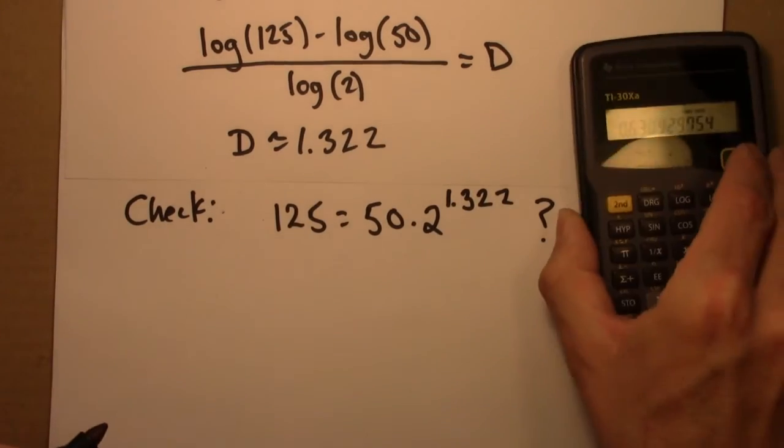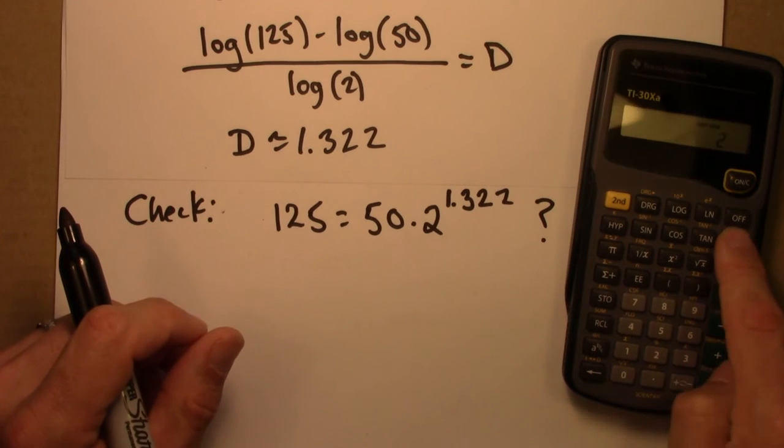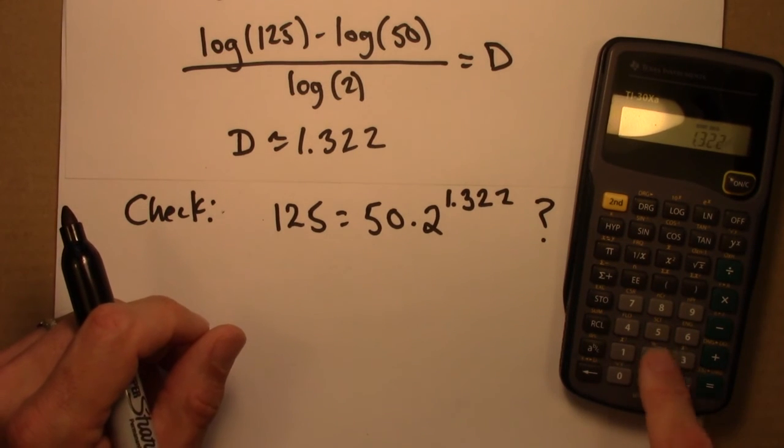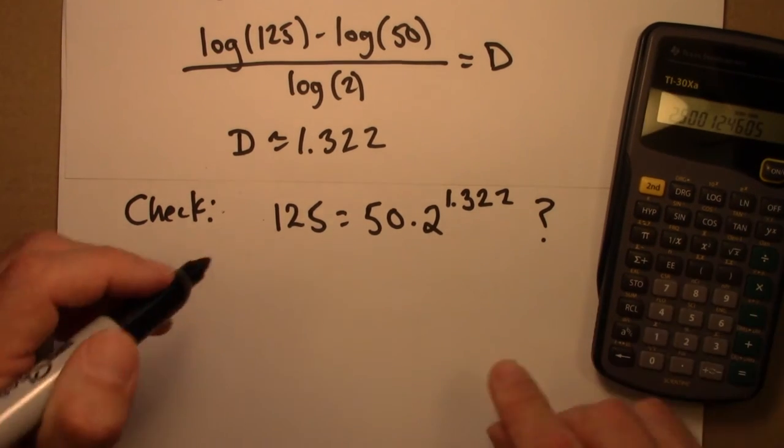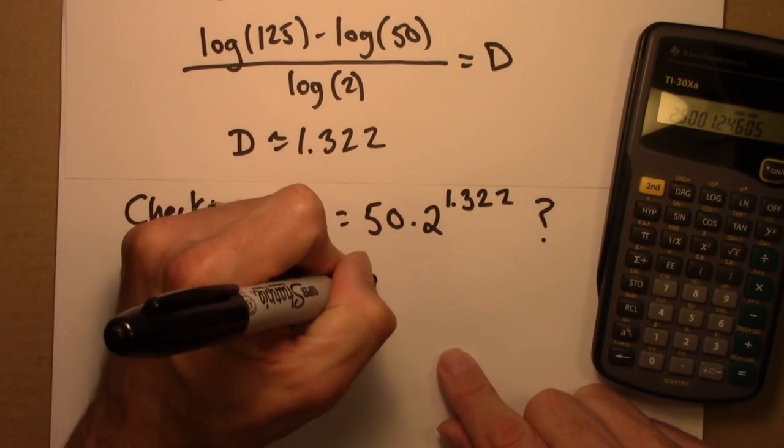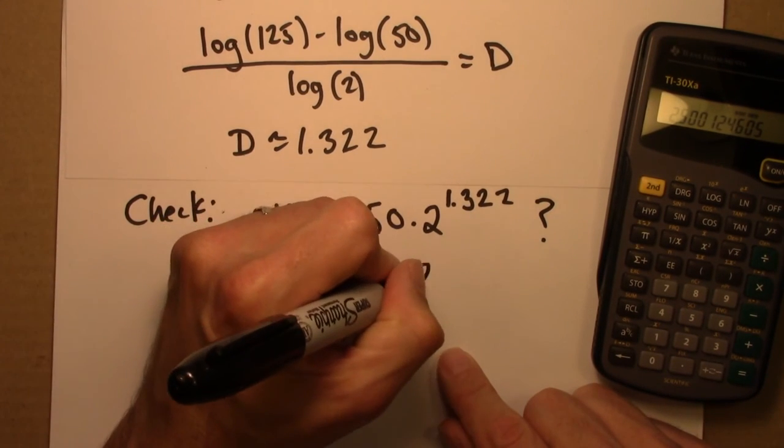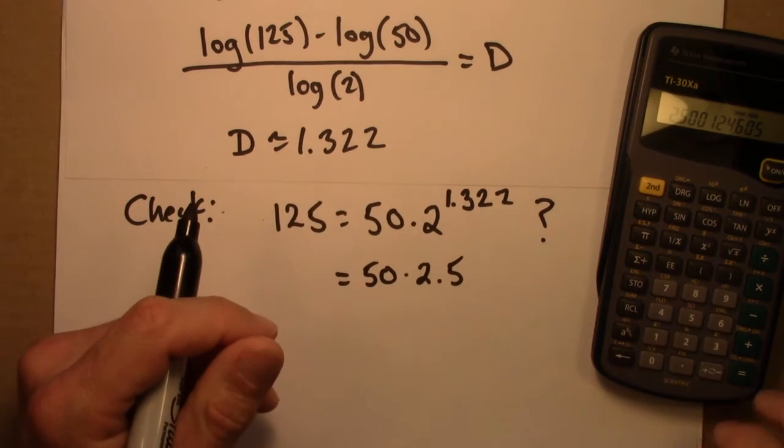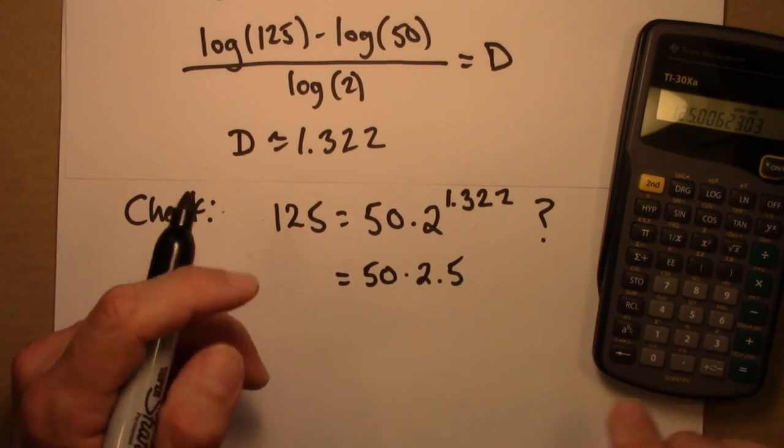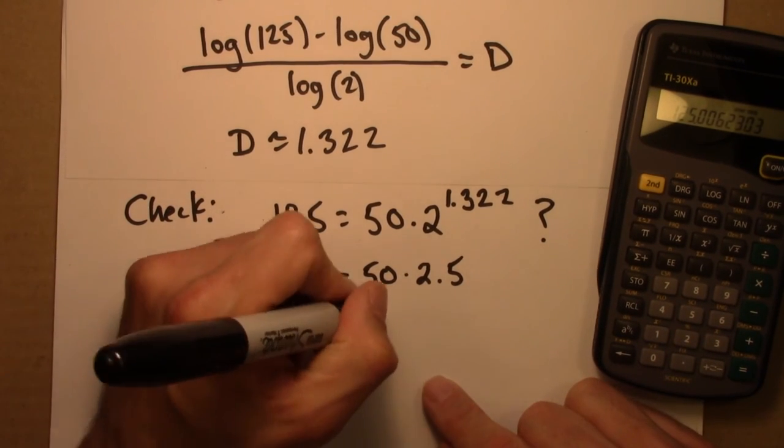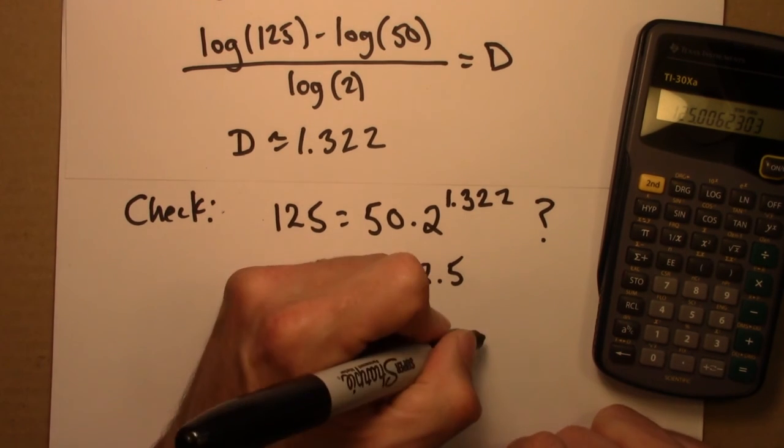Let's see, what's 2 to the 1.322? About 2.5. And 2.5 times 50 is indeed 125.